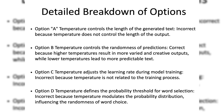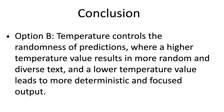Option D: temperature defines the probability threshold for word selection. This statement is incorrect because temperature does not set a fixed threshold for word selection. Instead, it modulates the probability distribution, influencing the randomness of word choice rather than setting a cutoff point.